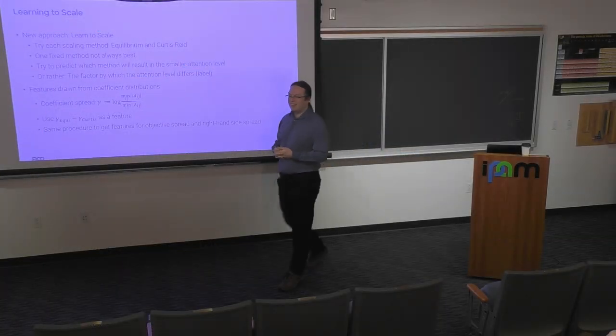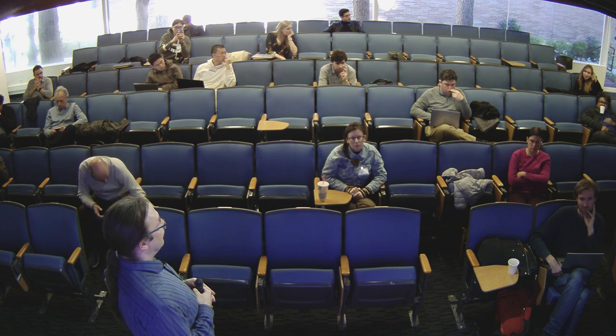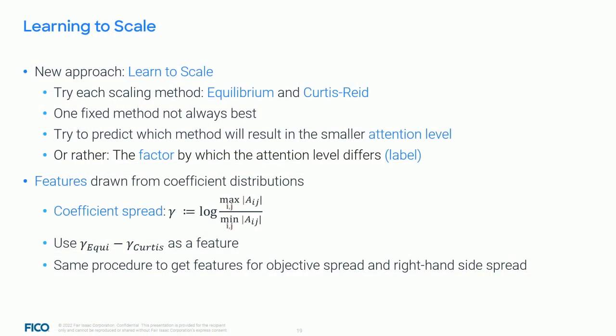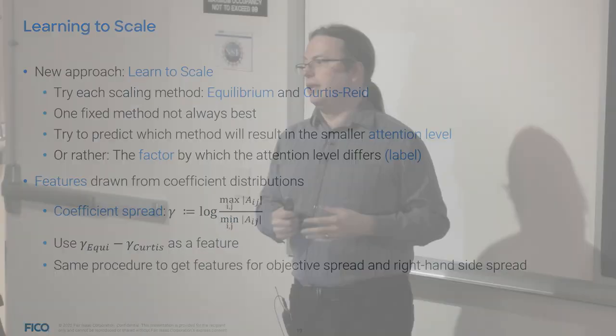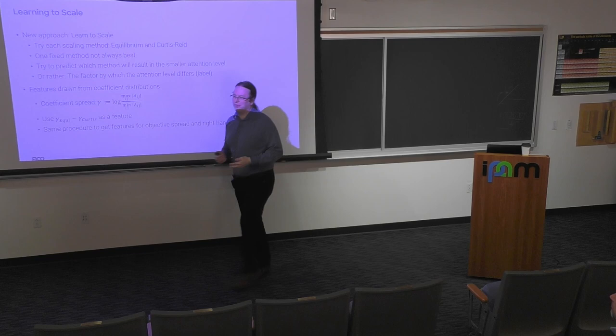Question: is there a way to pose an optimization problem that finds the best way of scaling? Curtis-Reid scaling is an attempt at this and does the best scaling for your original full matrix, but it does not necessarily carry down to the sub-matrices seen later in the solution process. To minimize the condition number at every simplex iteration would require rescaling essentially at every step — that's not tractable.